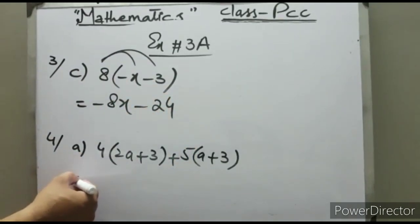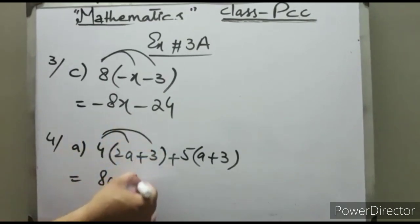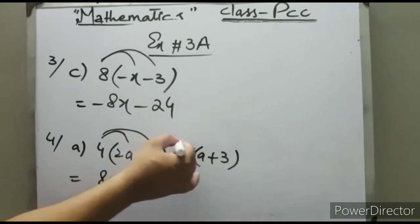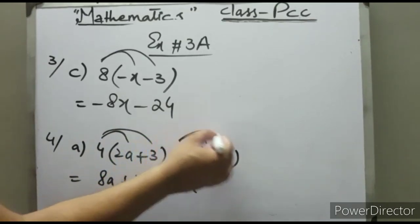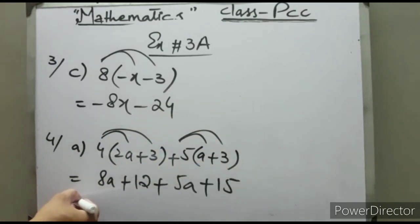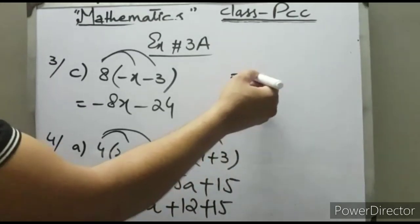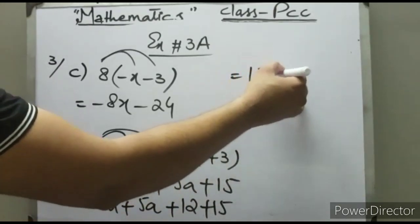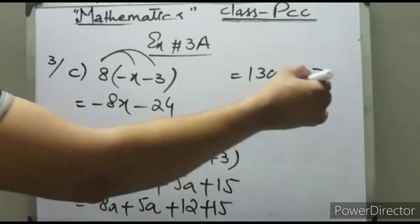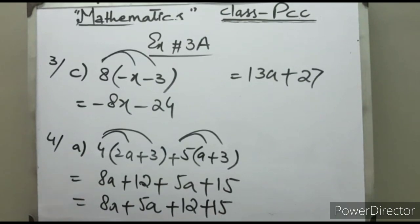Similarly, in question number 4 part A, we have to expand and simplify the expression. 4(2a+3) gives 8a + 12, plus 5(a+3) gives 5a + 15. Arrange the expression: 8a + 5a + 12 + 15. So we have 13a + 27. This is the final answer of this quadratic expression.